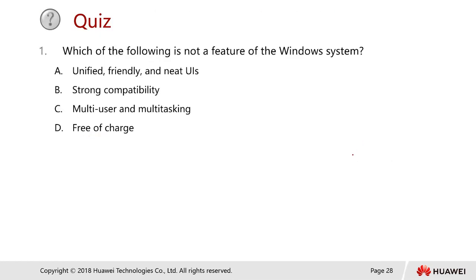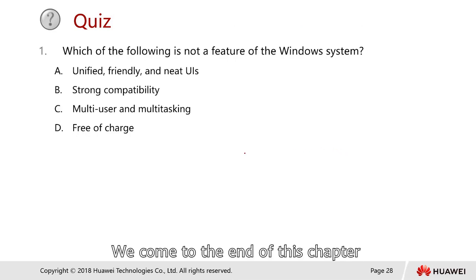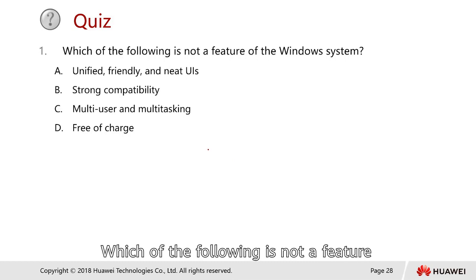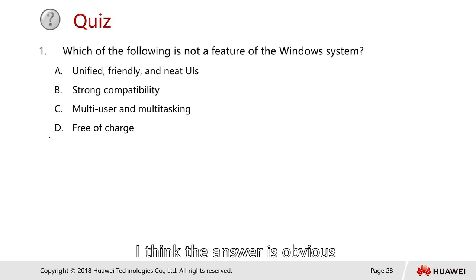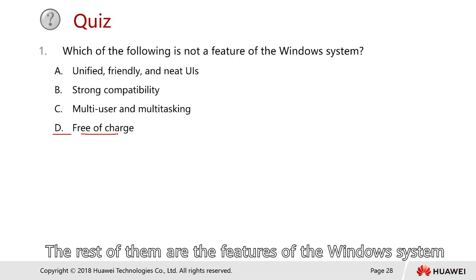Coming to the end of this chapter, here is a quiz: Which of the following is not a feature of a Windows system? The answer is D — free of charge. The rest of the options are features of a Windows system.